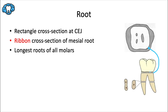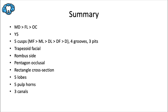For the mid-root cross sections: the distal root is oval shaped, while the mesial root is biconcave — or ribbon shaped — since it has two concavities. This is almost exactly what the mandibular incisors looked like in cross section at the middle of their roots. Also, these are the longest roots of all the molars — though the canine roots still hold the title for the longest roots in the entire mouth, specifically the maxillary canine.